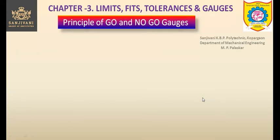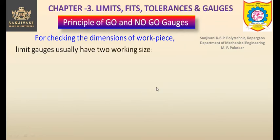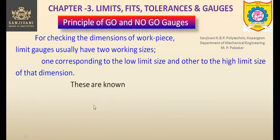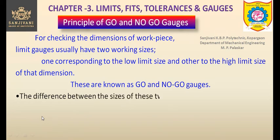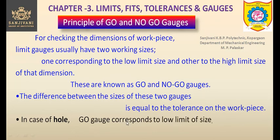The principle of go and no-go gauges for checking dimensions of a workpiece: limit gauges usually have two working sides or ends — one corresponding to the low limit size and the other corresponding to the high limit size of that particular dimension. These are known as go and no-go gauges. The difference between the sizes of these two gauges is equal to the tolerance on the workpiece.